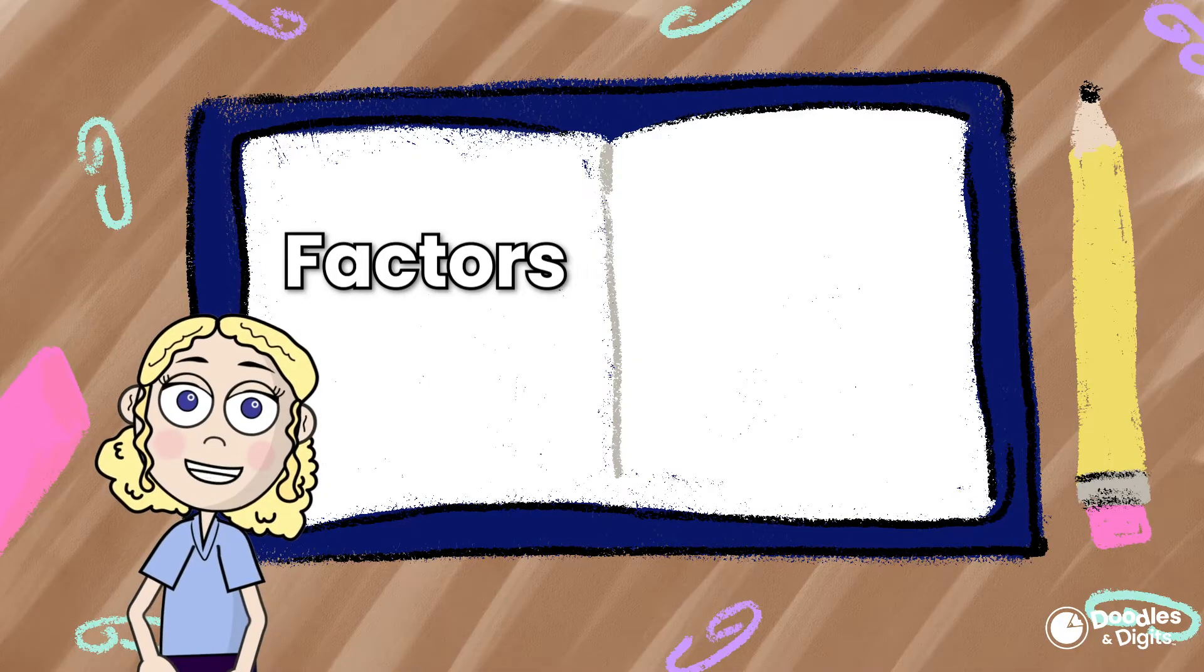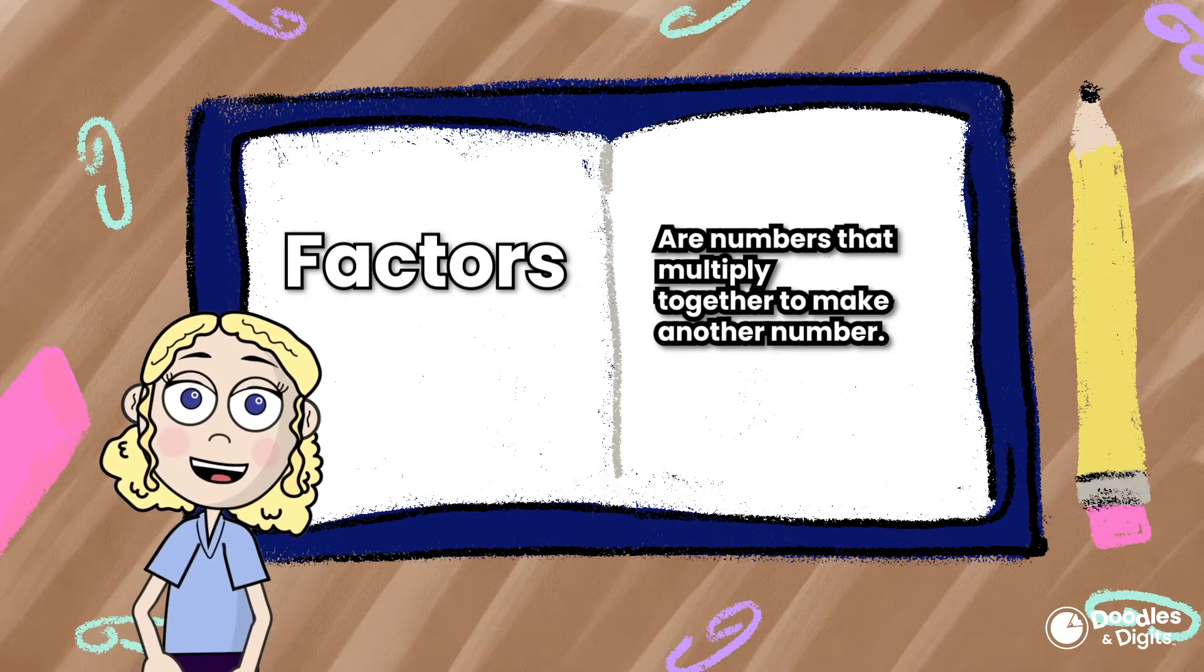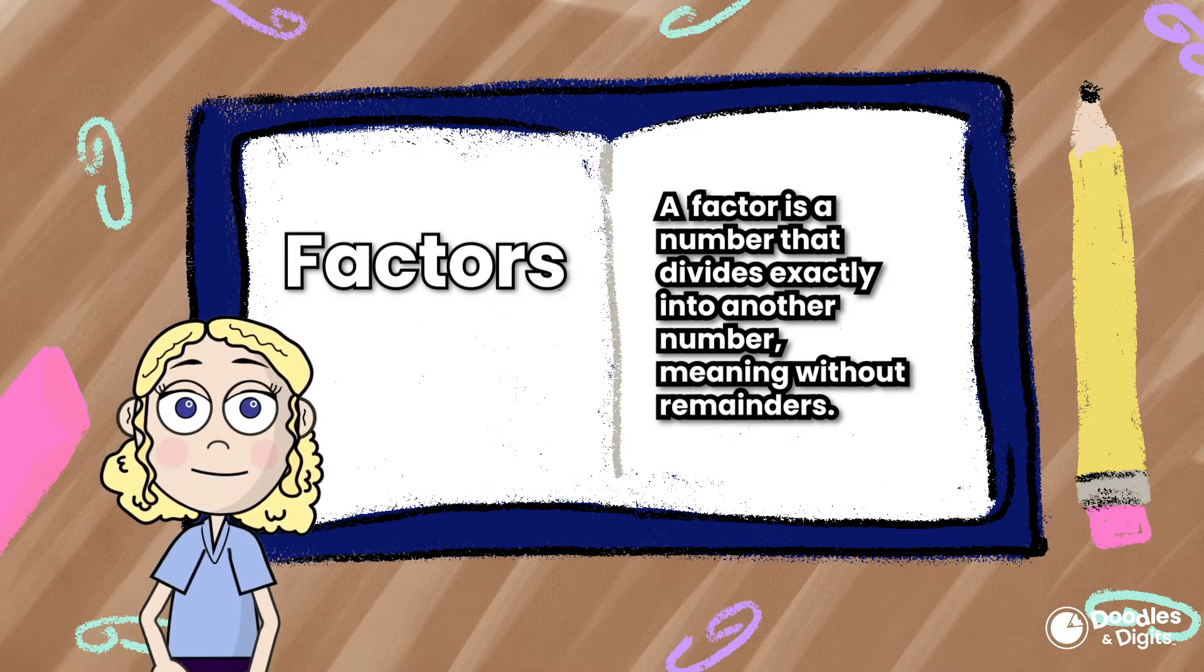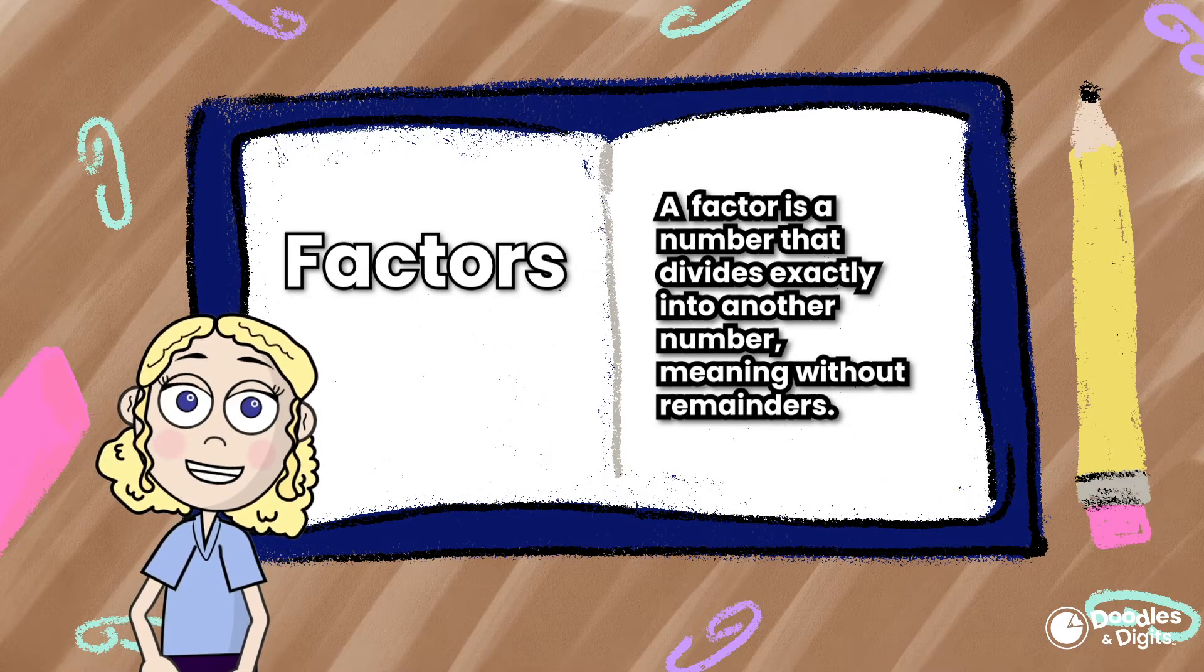Alright, so what are factors? Factors are numbers that multiply together to make another number. Another definition could be that a factor is a number that divides exactly into another number, meaning without remainders.